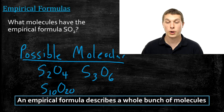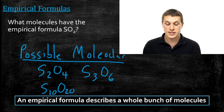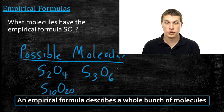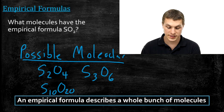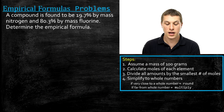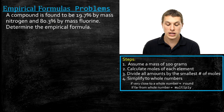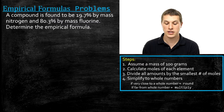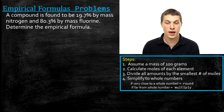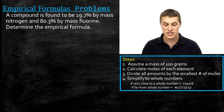Let's talk about what types of problems you typically do with empirical formulas. Since empirical formulas are those we can measure more easily from experiment, the typical problem will give you the percent by mass of a compound. For example, a compound is found to be 19.7% by mass nitrogen and 80.3% by mass fluorine, and the question is: determine the empirical formula. You cannot determine the molecular formula — you can't figure out exactly how many nitrogens and fluorines are in the compound. All you can do is determine the ratio.